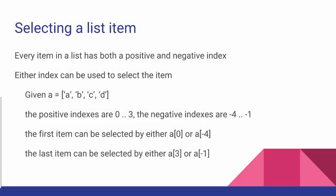Every item in a list has both a positive and a negative index, and either one of those can be used to select the item. For example, if we have a list named A containing four values: A, B, C, and D,